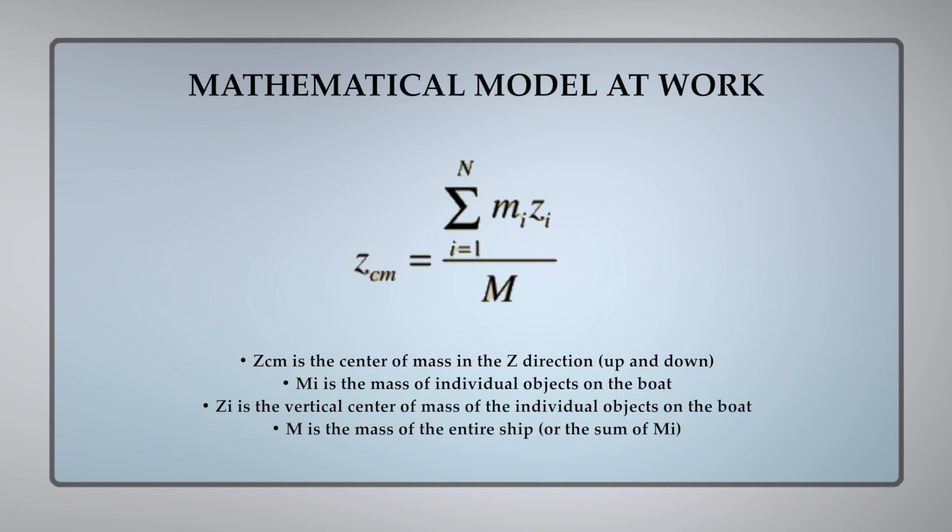Where ZCM is the center of mass in the Z direction, up and down. MI is the mass of the individual objects on the boat. ZI is the vertical center of mass of the individual objects on the boat. M is the mass of the entire ship, or sum of MI. Here's a sample problem for you to tackle.